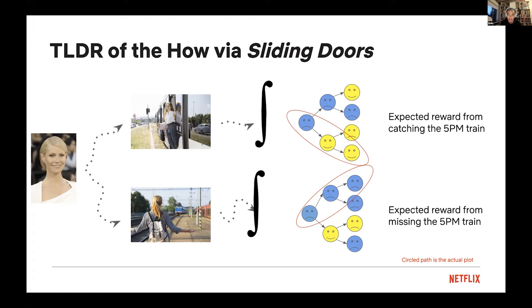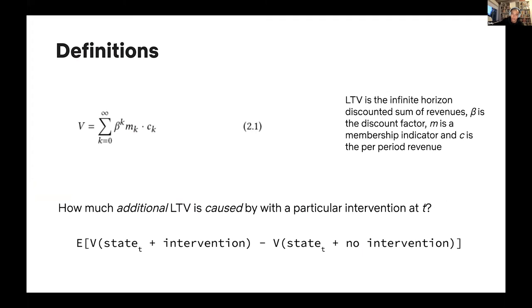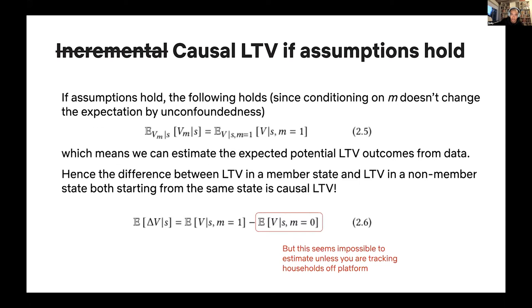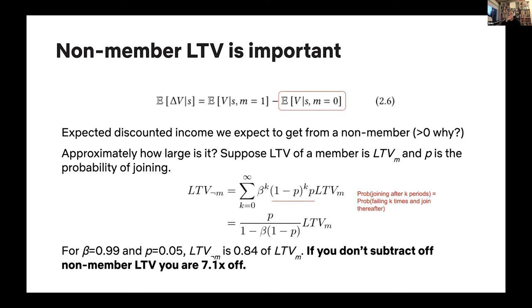The analogy represents: what is the value of someone joining the Netflix train versus not joining? The value of pushing Gwyneth Paltrow onto the train is the difference in expected utilities — integrating over all future paths on the upper fork minus the expected utility integrating over all paths on the bottom fork. The value of a non-member — not catching the train — is very important. LTV as commonly computed is basically just the upper half, but you're supposed to also care about the value of the non-member state.